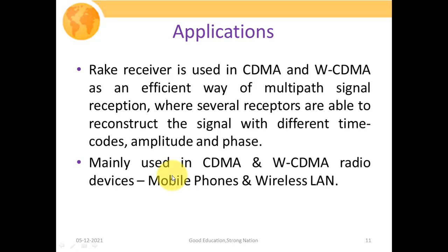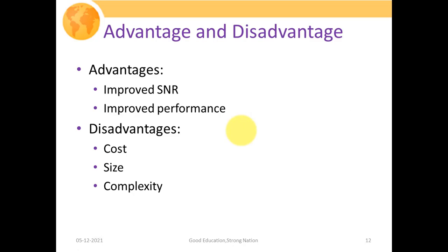The rake receiver is used in CDMA and WCDMA as an efficient way of multipath signal reception, where several correlators reconstruct the signal with different time codes, amplitude, and phase. It is used in CDMA and WCDMA-based radio devices such as mobile phones and wireless LAN. The overall objective is to obtain a high SNR at the receiving side in order to increase the reliability and performance of the system.